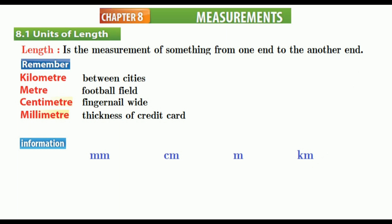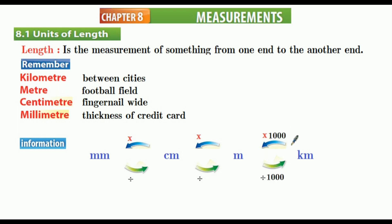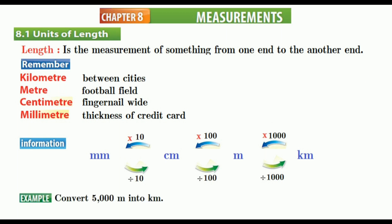Now we are going to make a rule to solve any kind of question. Moving from right to left, we multiply. Moving from left to right, we divide. The conversion factors are: one kilometer makes 1000 meters, one meter makes 100 centimeters, and one centimeter makes 10 millimeters.